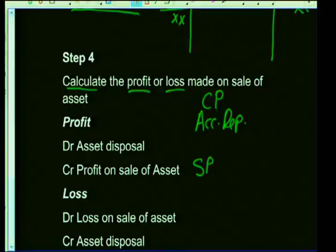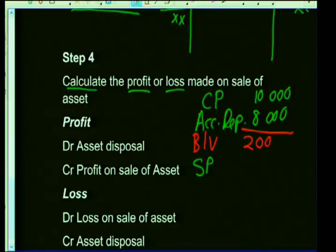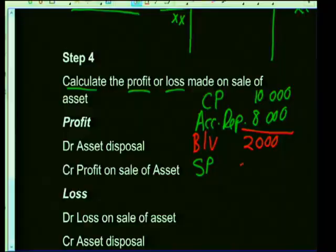If a profit is made, the journal entry is: debit asset disposal, credit profit on sale of asset. If a loss is made — for example selling for 1,800 when the asset is worth 2,000, giving a loss of 200 rand — the entry is: debit loss on sale of asset, credit asset disposal. Those are the four steps for disposal at the beginning of the year.